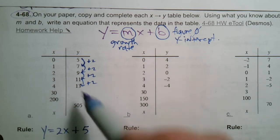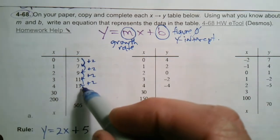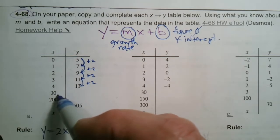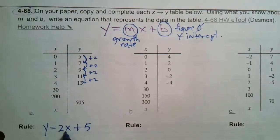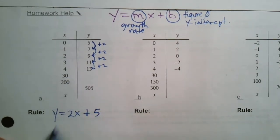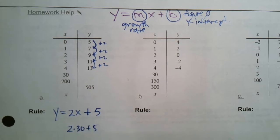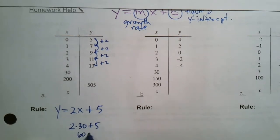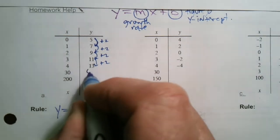So once I know my rule, now I can complete the table. I'm not going to just add two again because my x now, in this case, is 30. So to figure that out, I plug in 30 into the x and do the math. So in this case, if I'm going to figure out when x equals 30, I'm going to say 2 times 30 plus 5. So that's 60 plus 5, or 65. So that's what goes there.